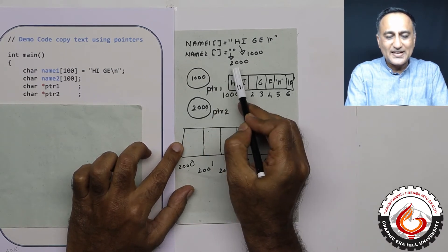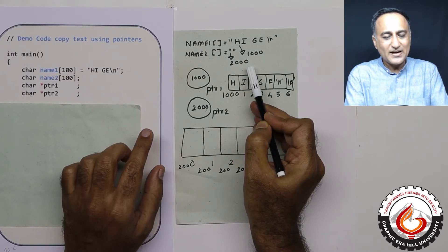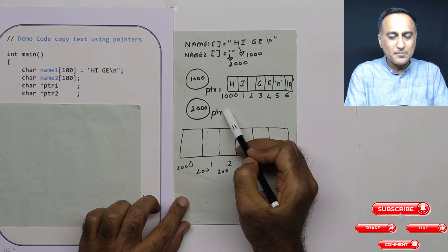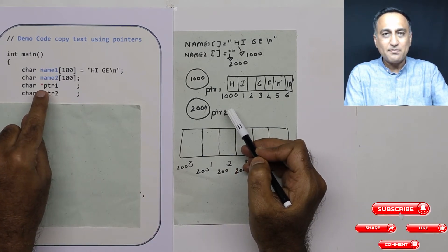Name2, let us say it exists at address 2000. So what I have done is I have declared two pointers to a character, ptr1 and ptr2. Right now they are containing random addresses.